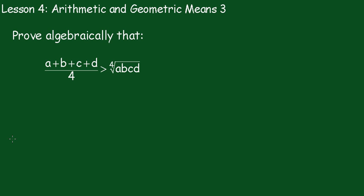Alright, now Lesson 4: Arithmetic and Geometric Means, Number 3. We have to prove algebraically that (a+b+c+d)/4 is greater than the fourth root of abcd. Now, of course, the geometrical proof is coming. I think it can be done, but it's quite tricky because you're moving into a fourth dimension. But I'm going to do it algebraically; that's probably a simpler proof.